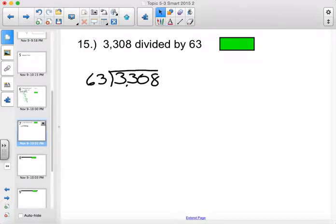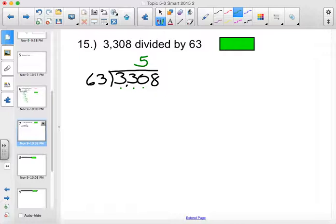We have 63, cannot go into 3, cannot go into 33, but it can go into 330. So, 63 into 330 would be five times. Five times 63 is 315. When we subtract, we get a partial remainder of 15, which is less than 63. And it tells us we're good to bring down the 8.